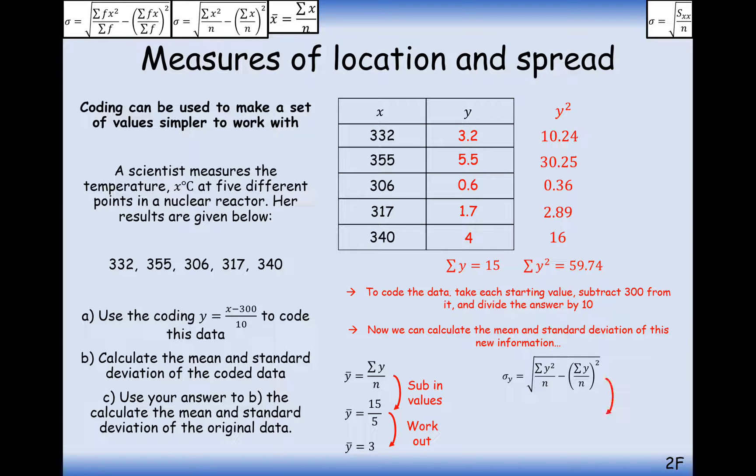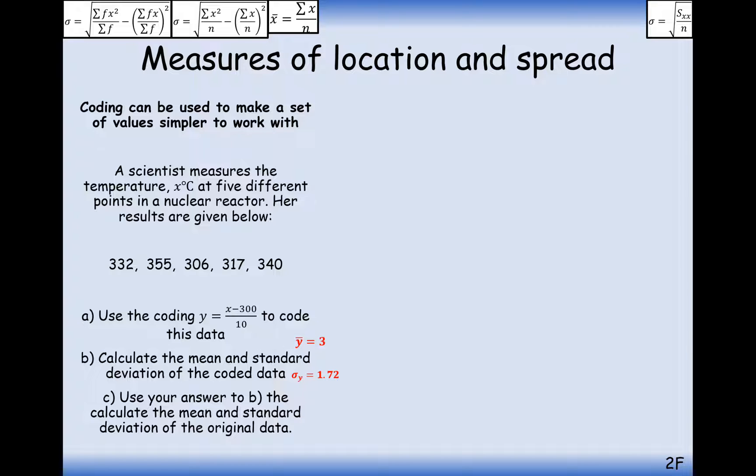And for the standard deviation, pull out your standard deviation formula, and it's going to be the sum of all of the squared values divided by how many there were, take away the mean squared, and this is going to give us 1.72. So these y values here, on average, were spread out from the centre of 3 by 1.72.